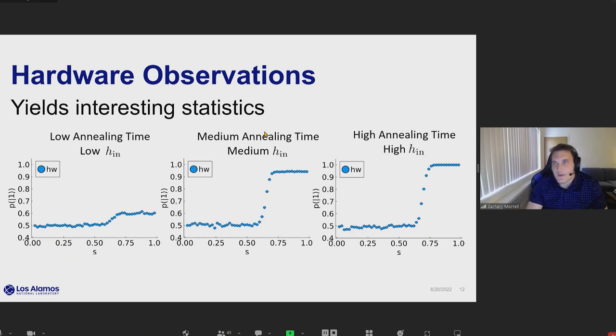What do we actually observe when we run this on the hardware? In the low annealing time regime, we get this relatively flat curve, and as we increase H-n and our annealing time, we get some various effects.